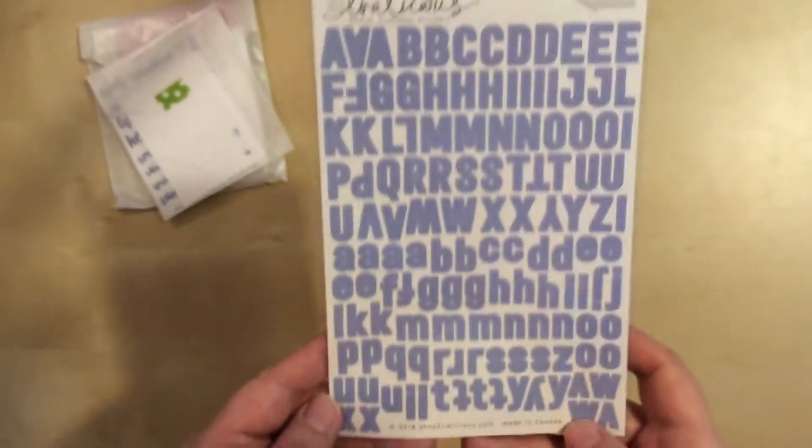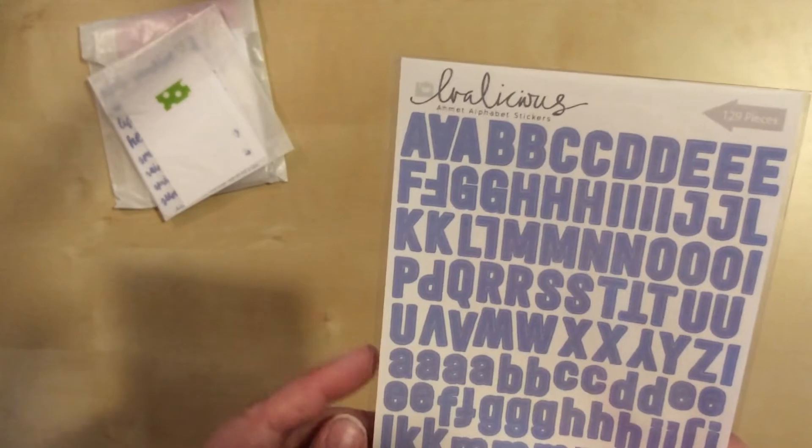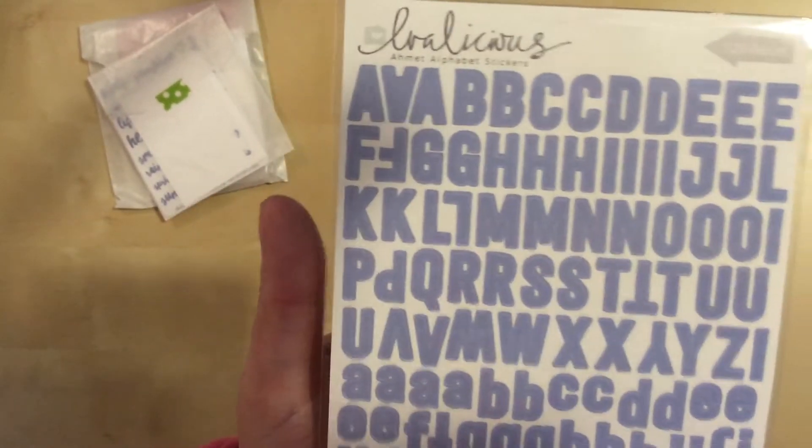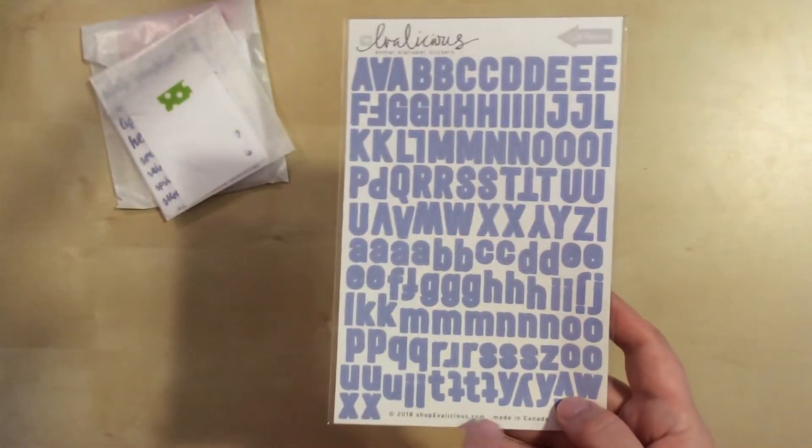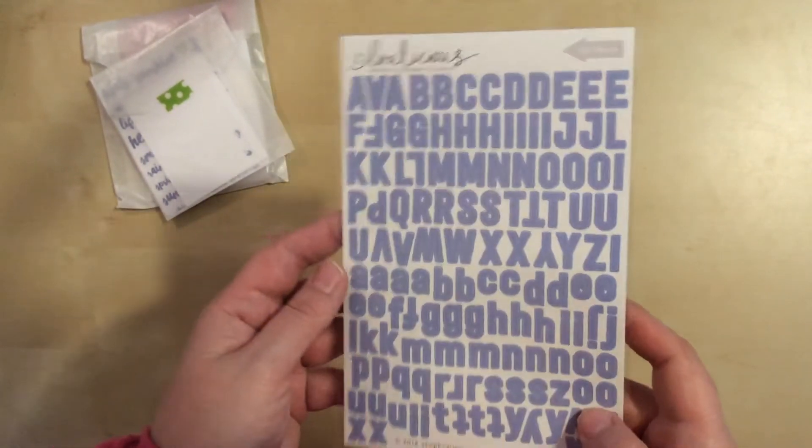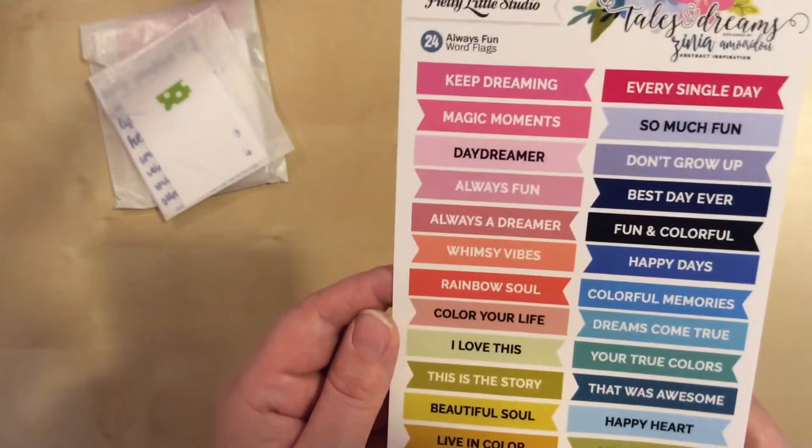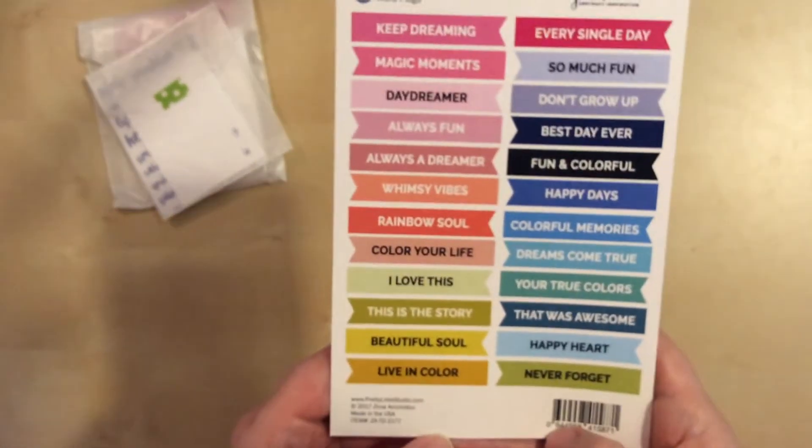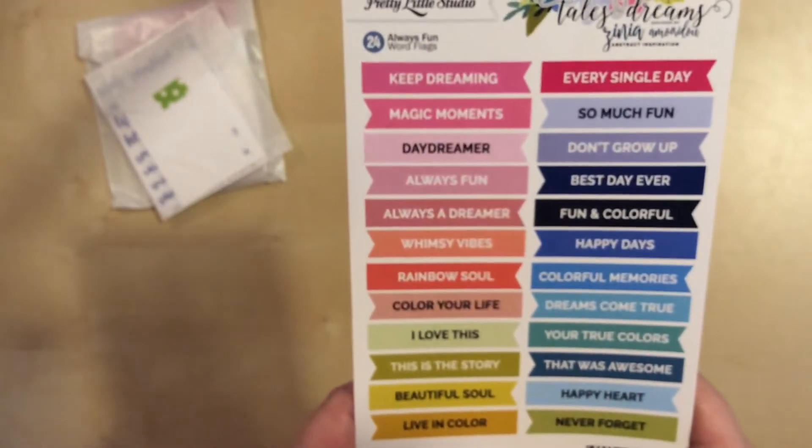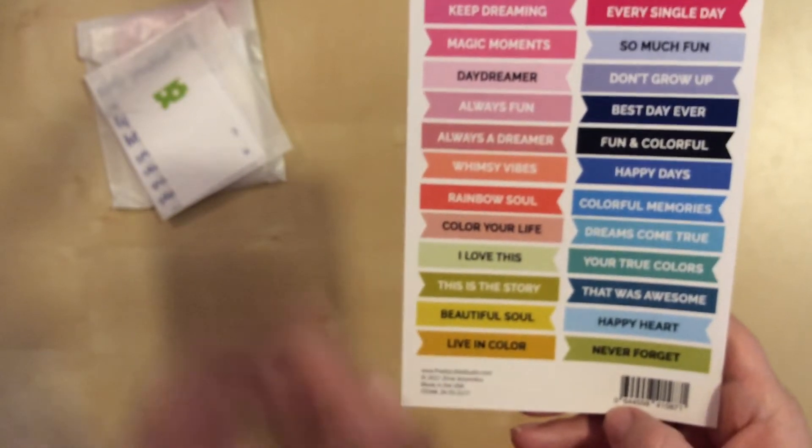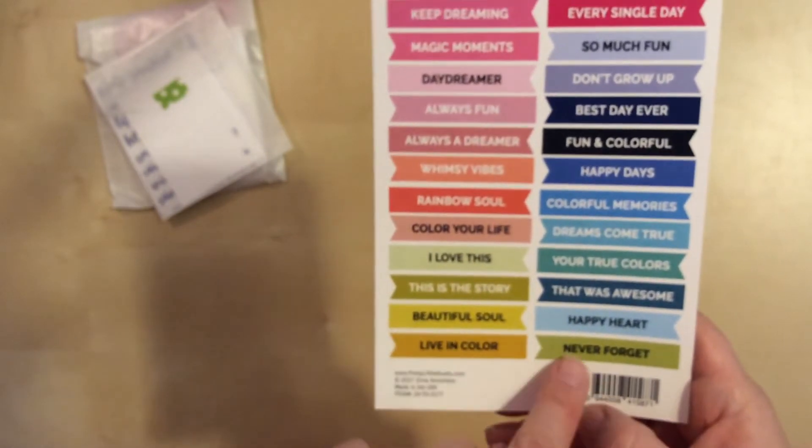Now let's look at our labels and letters. The letters are from Evilicious again. I love this kind of periwinkle color. This will work with those photos I have from the conservatory. Then these are the cut apart flags. Some pretty generic phrases you could probably use with anything. Colorful memories, this is the story, never forget, always fun, magic moments.